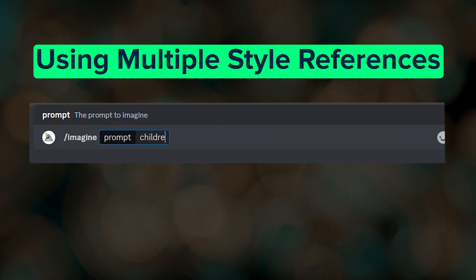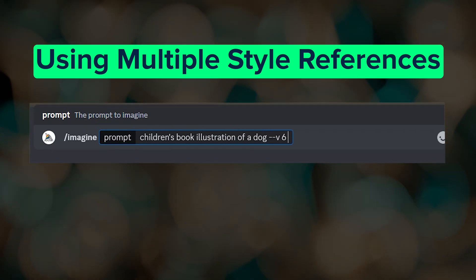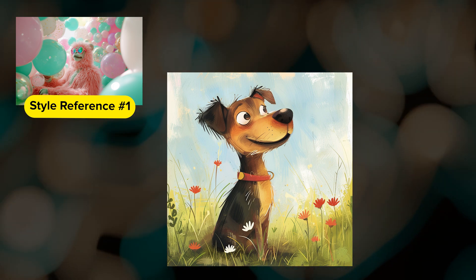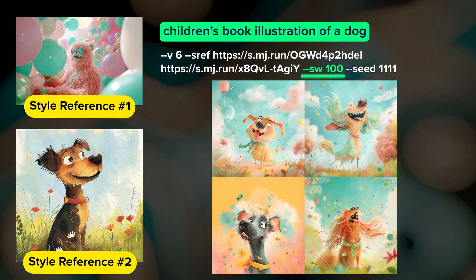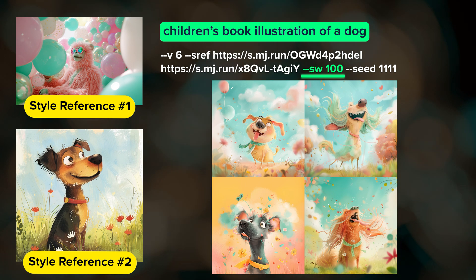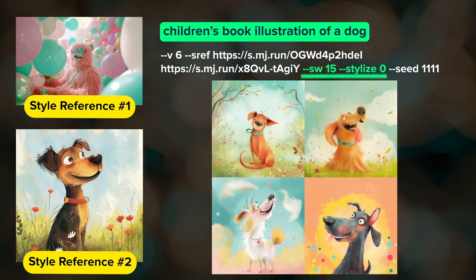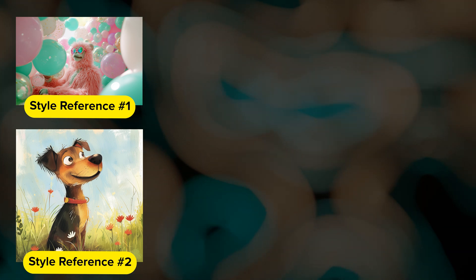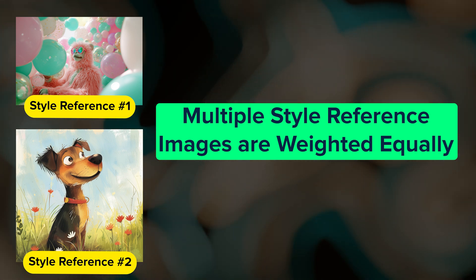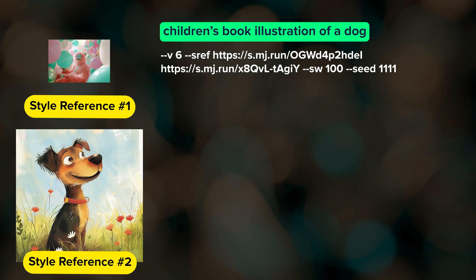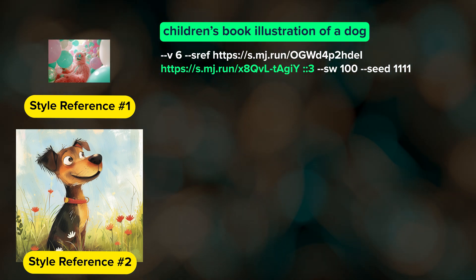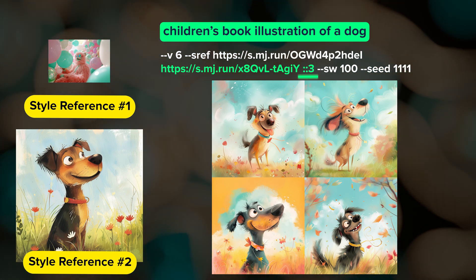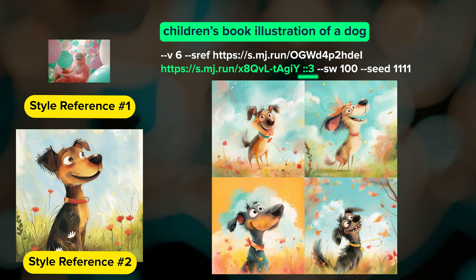Another approach is to include more than one style reference image, because the style reference parameter can accept multiple URLs — just separate each URL with a space. To boost my chance of getting illustration-style images, I included a second style reference image, and the results at style weight 100 were much more in line with what I was going for. You can also play around by decreasing the style weight or stylize value. By default, Midjourney weights multiple style reference images equally, but you can assign relative weights by putting two colons and a number after the image URL. For example, putting ::3 after my second image URL gives it three times more influence. Playing around with these relative weights can be really fun, especially if you have diverse style references.